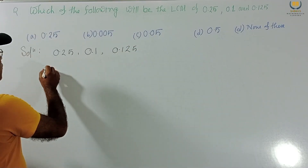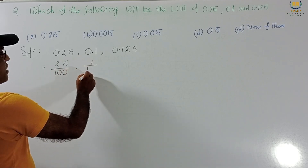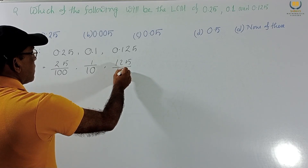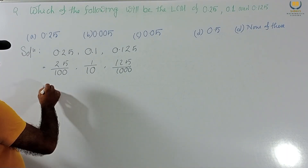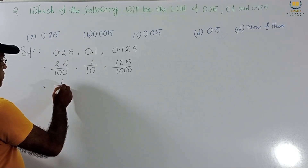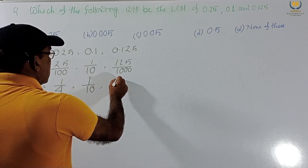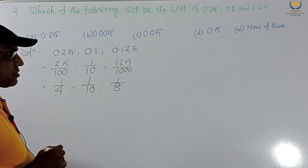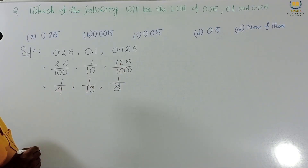Solution: First rewrite the decimal numbers as fractions. 0.25 = 25/100 = 1/4, 0.1 = 1/10, 0.125 = 125/1000 = 1/8. Cancelling to lowest form: we get 1/4, 1/10, and 1/8. Now our requirement is LCM.